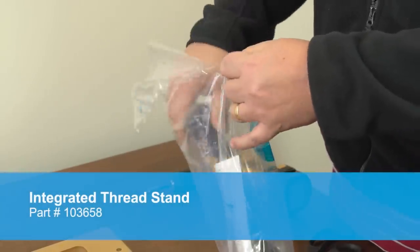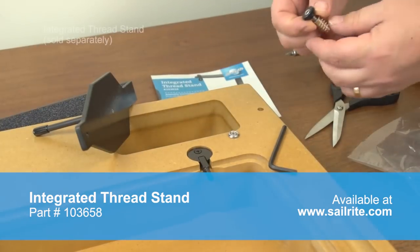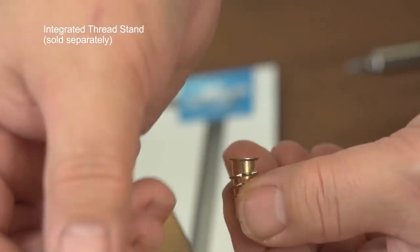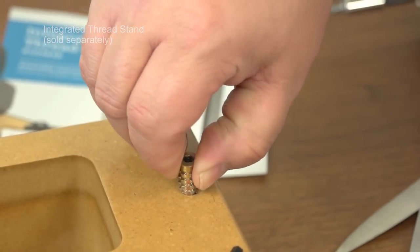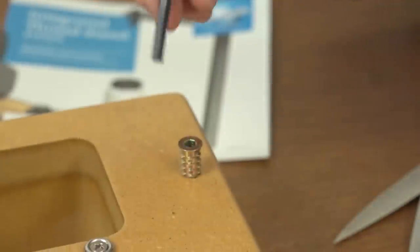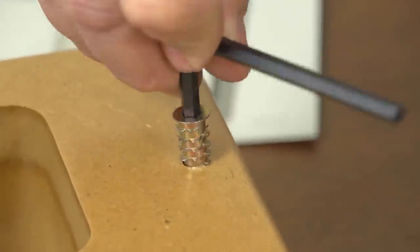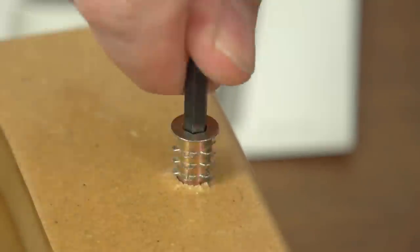Now we're going to show the optional integrated thread stand from Sailrite. The integrated thread stand is sold separately from the wooden base. Remove the screw from the threaded insert. You'll find a pre-drilled hole in the Ultrafeed Wooden Base. Insert the threaded insert and then use the included hex key and screw it down securely.